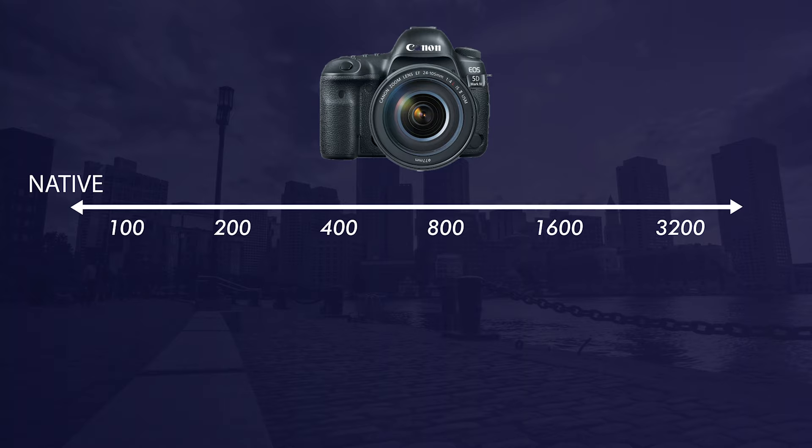Going back to DSLRs, there's a native ISO scale: 100, 200, 400, 800 — it doubles each time and each of those changes in ISO is one stop of light. So ISO 100 is one stop darker than ISO 200. These native ISOs — the lowest native ISO — is what you want to aim for. Ideally when shooting with a Canon DSLR you want to aim for ISO 100 or 200. Once you start to get higher than that, the noise and grain is going to start to pick up in your footage.